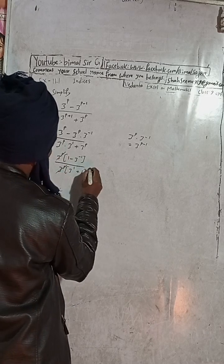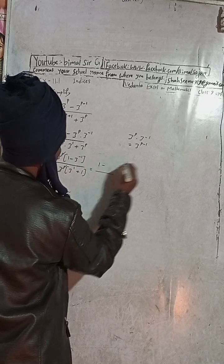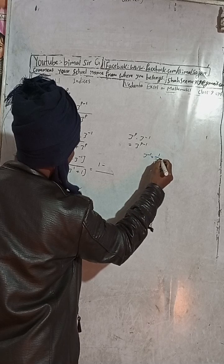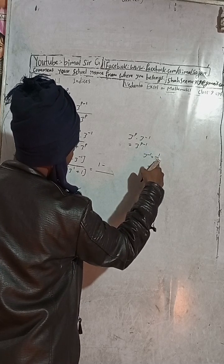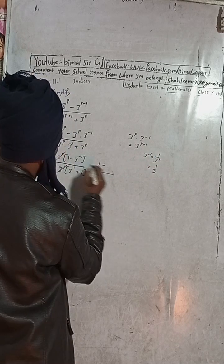Now what you can do here, this will be cancelled, okay? So remaining is here 1 minus 3 to the power minus 1 can be written as 3 to the power 1. This one is written as 1 by 3 to the power plus 1, which is equal to 1 by 3, okay? When this comes down it will be plus, plus 1.